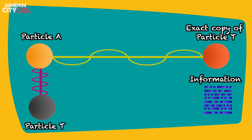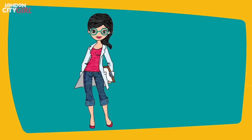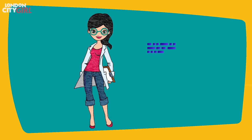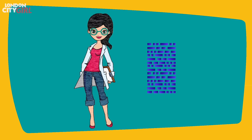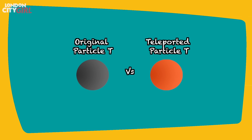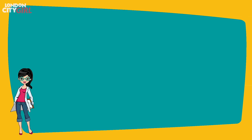This method of teleportation has only ever been done on particles, and a single human being contains a huge amount of particles — meaning an immense amount of data would need to be transferred for human teleportation. Transferring this amount of data using the means we have today would take upwards of a quadrillion years. At the same time, it opens up a philosophical debate of whether the teleported particle T is actually the original particle T or just a precise copy.